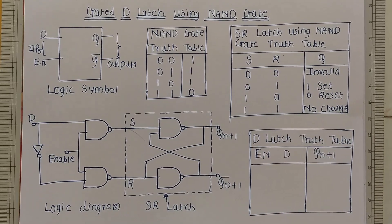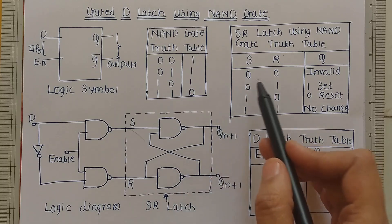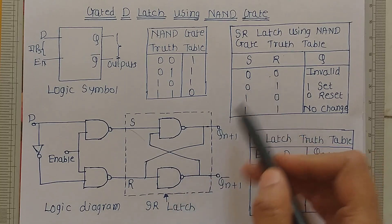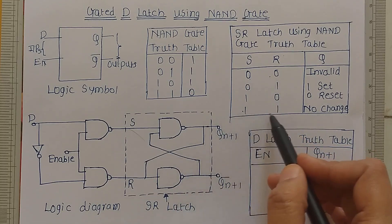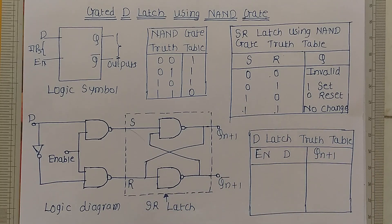There are many applications where there is no necessity of having a separate S and R input to a latch. The input combinations S equals zero R equals zero, and S equals one R equals one, are not needed. In those applications, we can use the gated D latch.